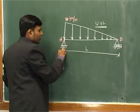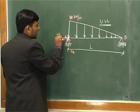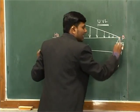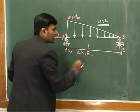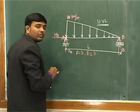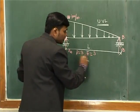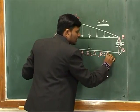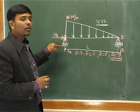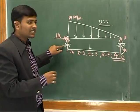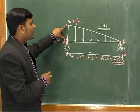First, check the degree of static indeterminacy. Hinge at A gives vertical and horizontal reactions; roller at B gives one vertical reaction. Total reactions = 3, equations = 3, so DSI = 0 — statically determinate. We can solve using the three equations of equilibrium: ΣFx=0, ΣFy=0, and ΣM at fixed end = 0.